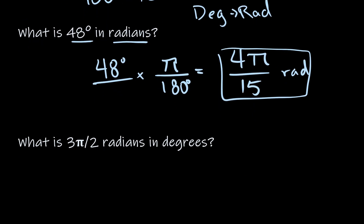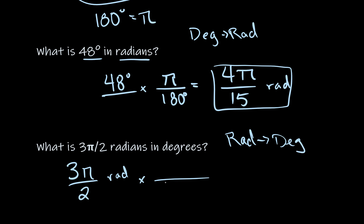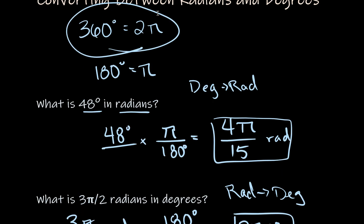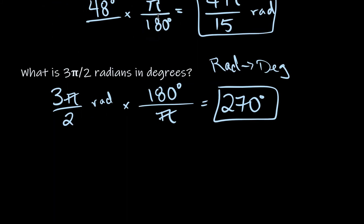To convert the other direction — radians to degrees — multiply by 180/π. For example, 3π/2 radians times 180/π: the π values cancel, and 3 × 180 ÷ 2 gives 270°. Those are two simple examples of converting between degrees and radians.